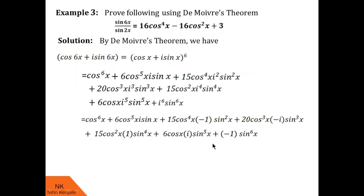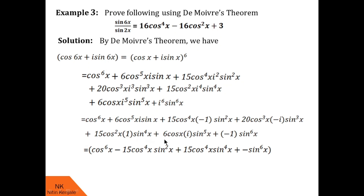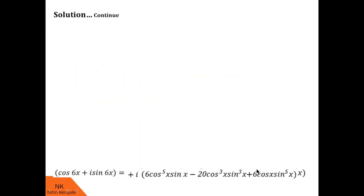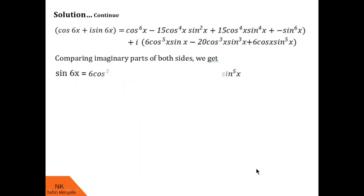Next is step 3: separation of real and imaginary parts. Real parts are cos⁶x − 15cos⁴x·sin²x + 15cos²x·sin⁴x − sin⁶x. The imaginary parts are the remaining terms. Since we want the expansion of sin 6x, we compare imaginary parts of both sides. The imaginary part on the left is sin 6x and on the right it is the corresponding expression, giving us the expansion of sin 6x.